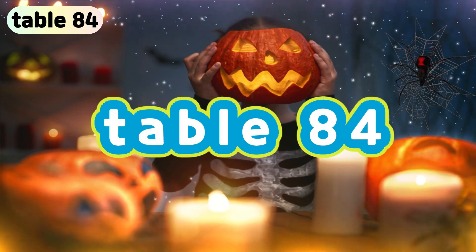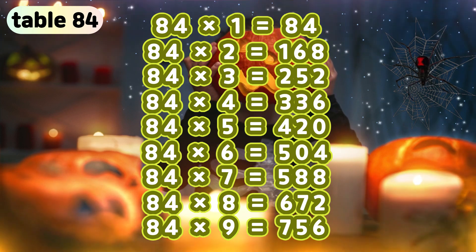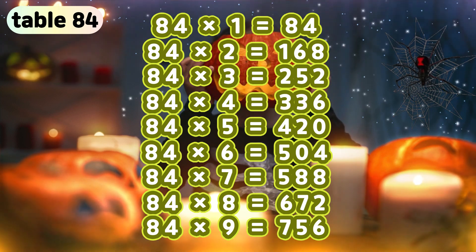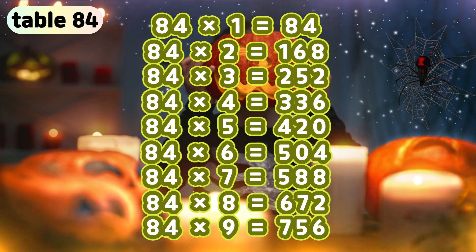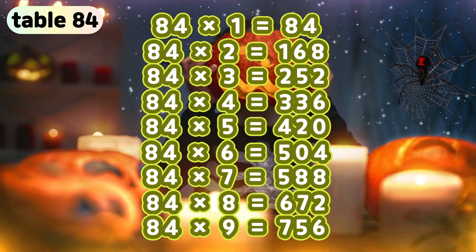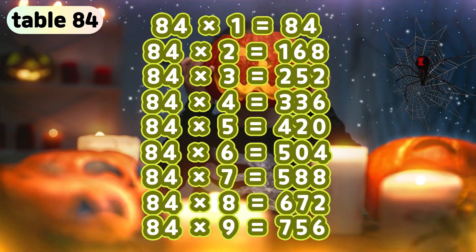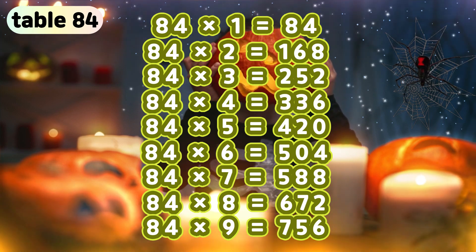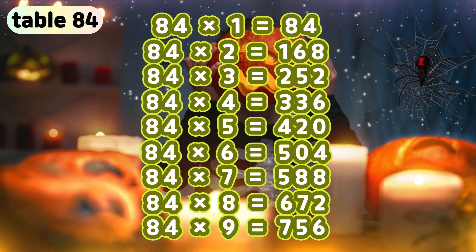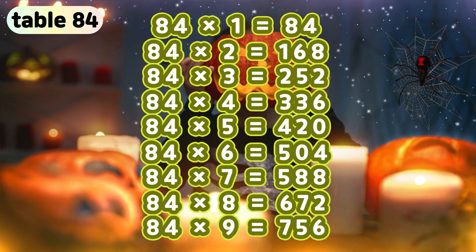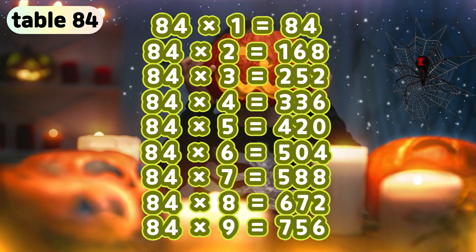Table 84. 84 times 1 is 84. 84 times 2 is 168. 84 times 3 is 252. 84 times 4 is 336. 84 times 5 is 420. 84 times 6 is 504. 84 times 7 is 567. 84 times 8 is 672. 84 times 9 is 756.